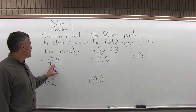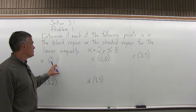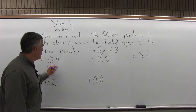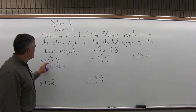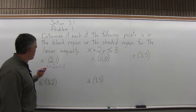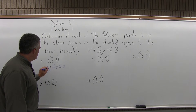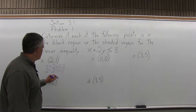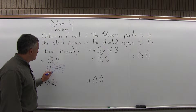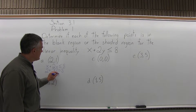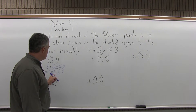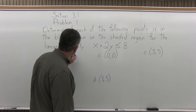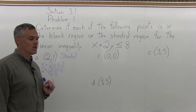The first point is 2 comma 1, so the x value is 2 and the y value is 1. Take the inequality x plus 2y is less than or equal to 8, and put 2 in for x and 1 in for y. So you get 2 plus 2 times 1, which gives 4 is less than or equal to 8. That's a true statement, so point (2, 1) is in the shaded region.